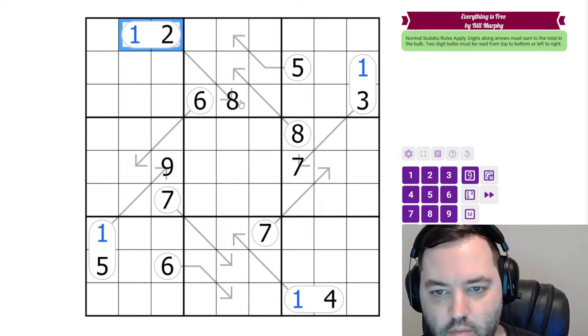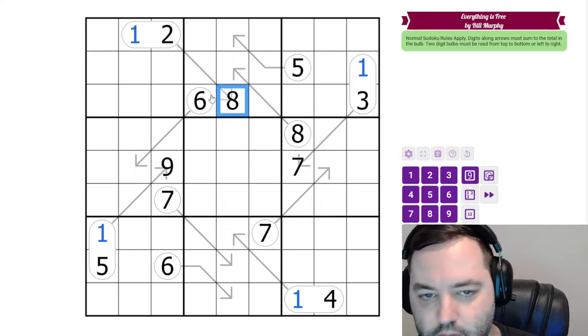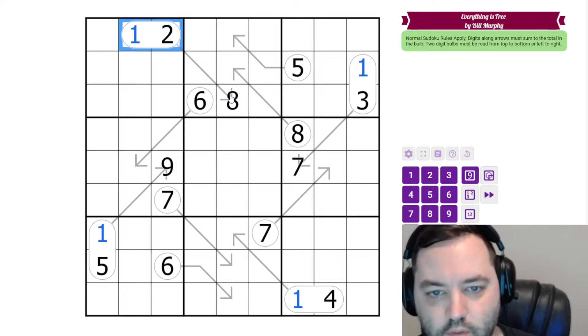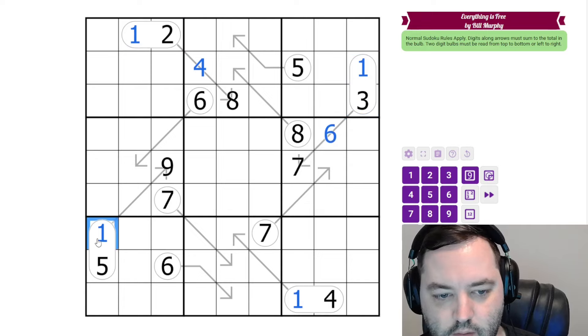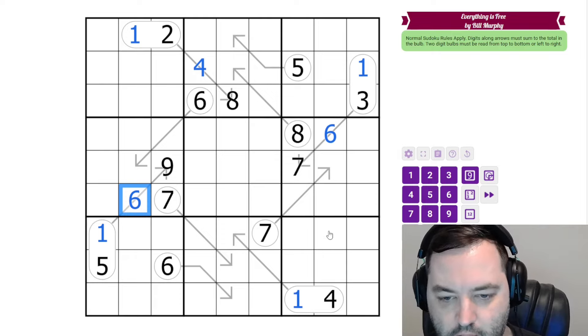And now three of these have givens on the arrows. So to make 12 with an 8, we need 4. To make 13 with a 7, we need 6. To make 15 with a 9, we need 6. And we'll come back to the last one.